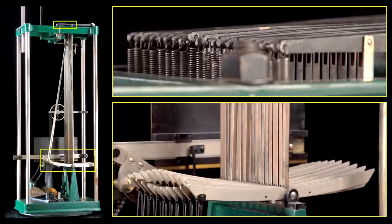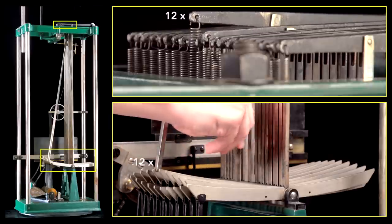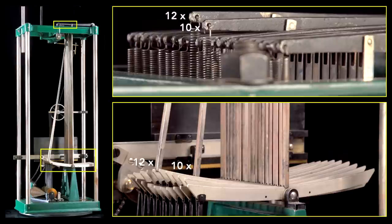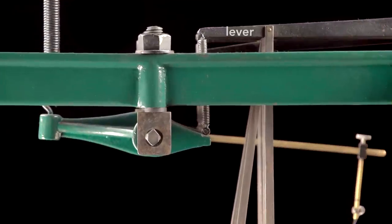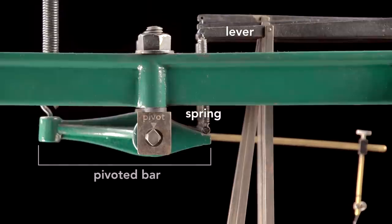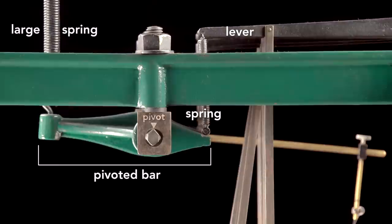Now, let me show you how the machine sums these sinusoidal motions weighted by their coefficients. I'll set the machine up to produce beats using sine 12x and sine 10x. Each lever at the top of the machine has a spring that connects it to a pivoted bar. A large spring balances the pull of the series of springs on the levers.